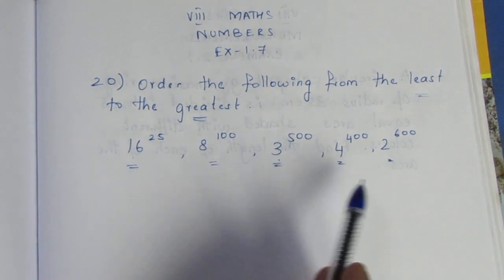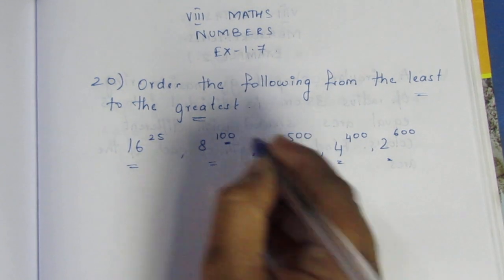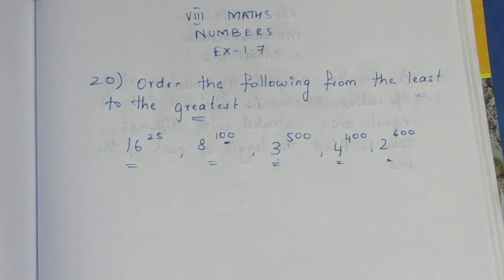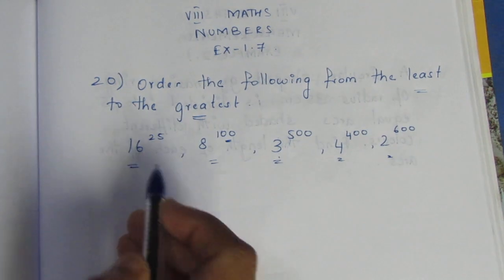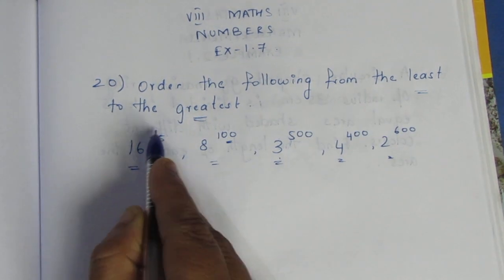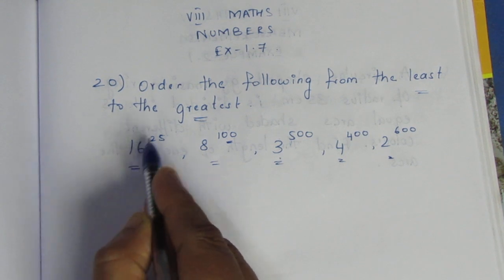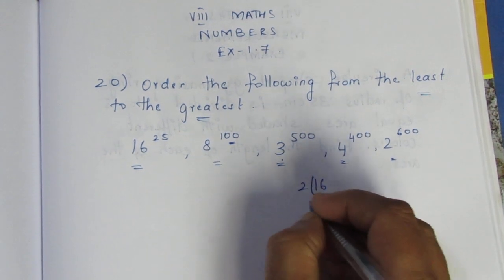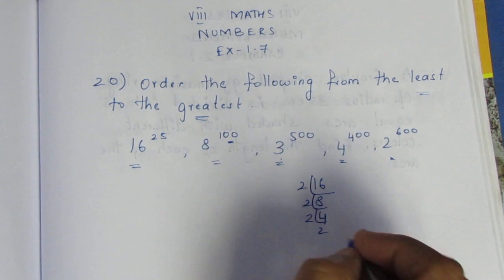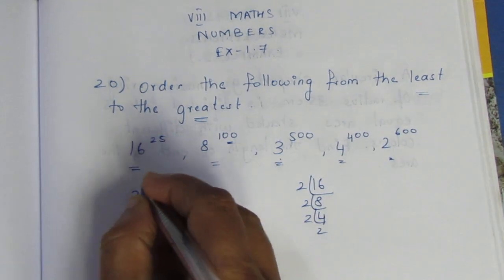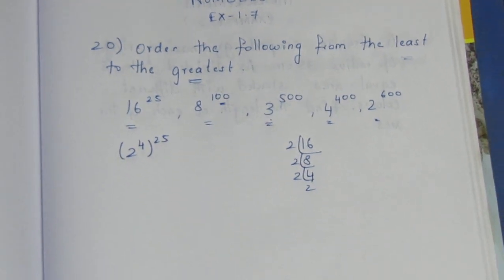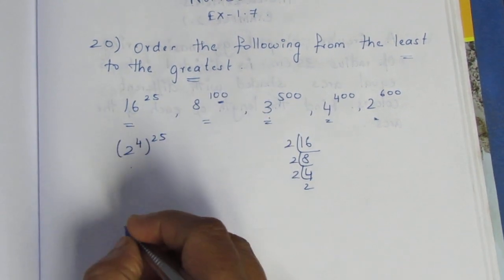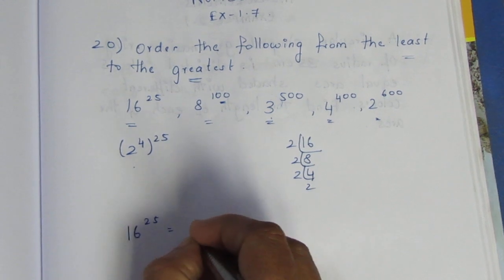The power is not the same. If we work with the power, we will try to convert everything to power 100. We will do power 100 — it makes it a little bit easier. So we convert: 16 power 25. Since 16 is 2 to the power 4, and 4 times 25 is 100, so 16 power 25 equals 2 power 100.